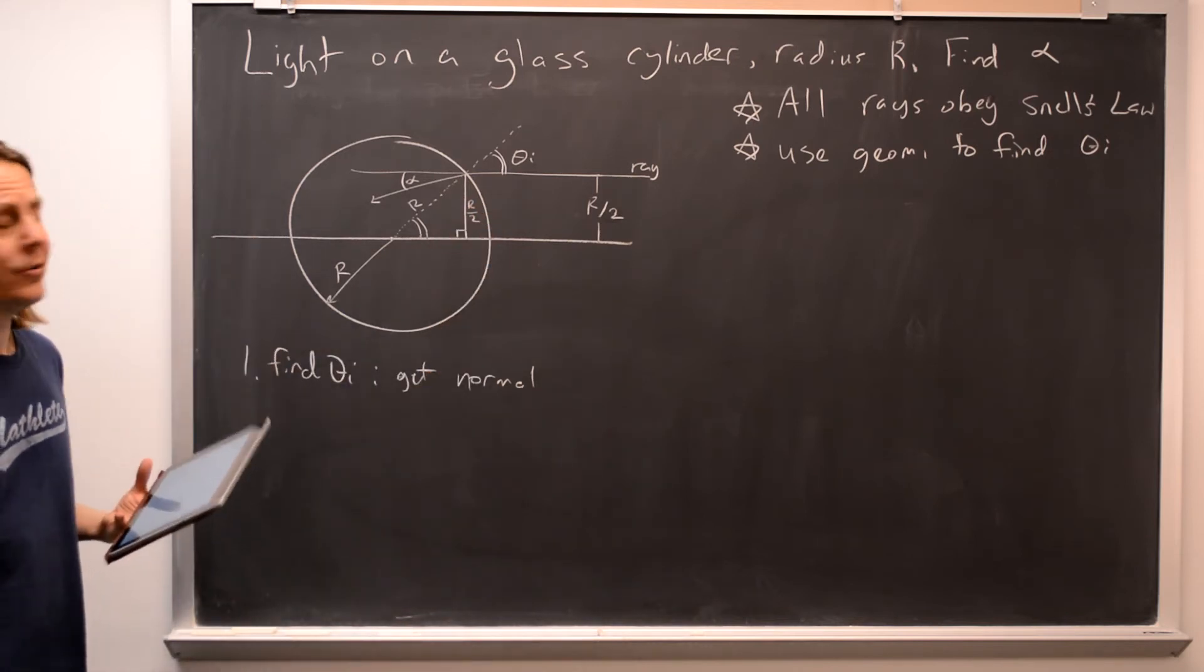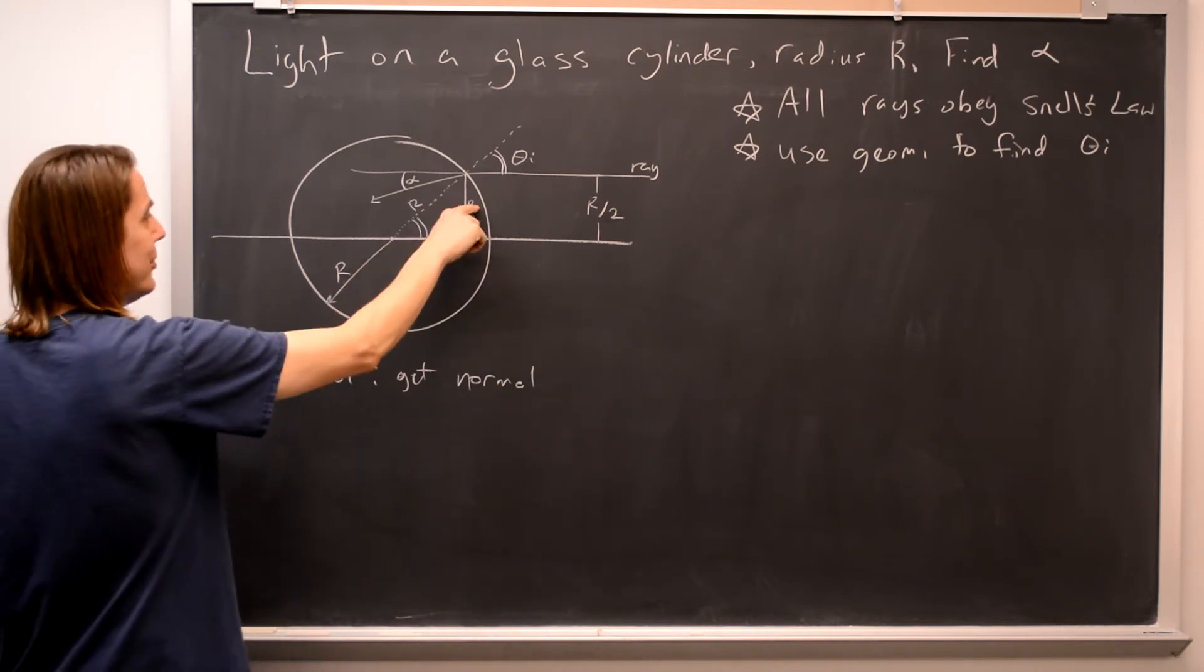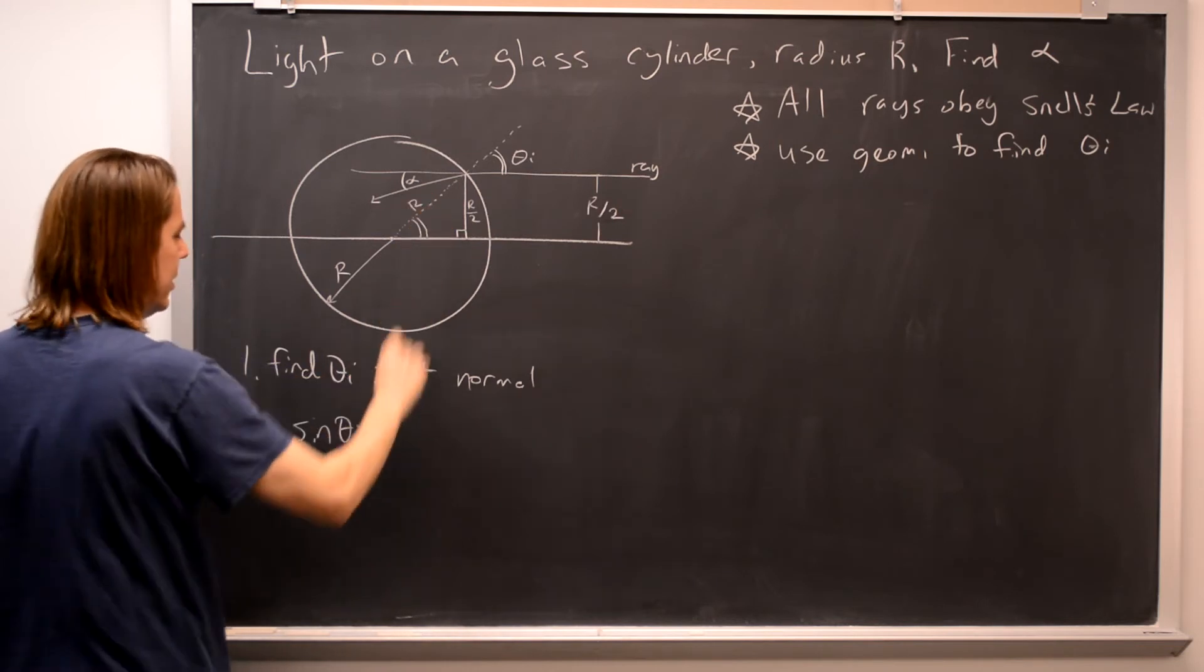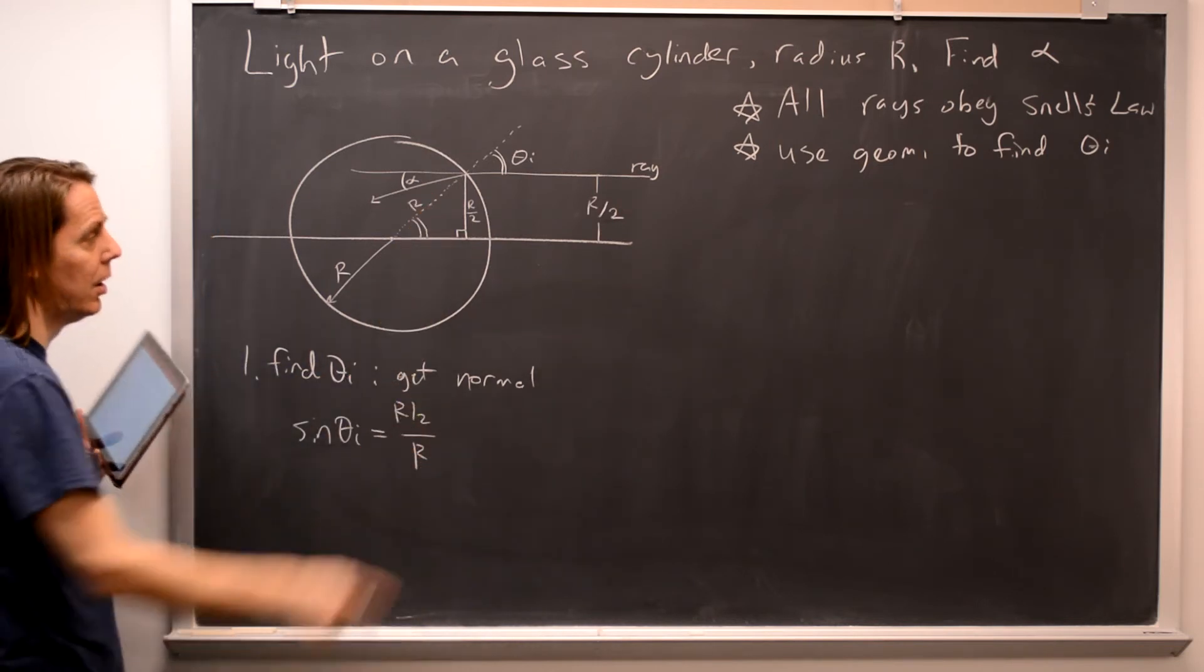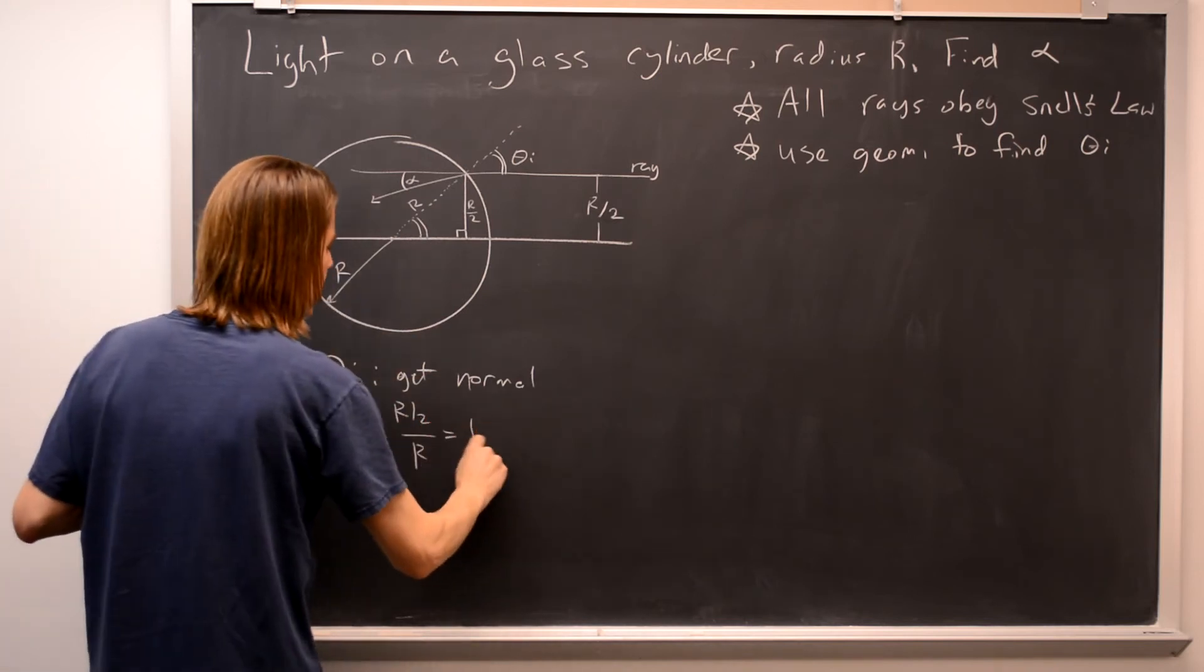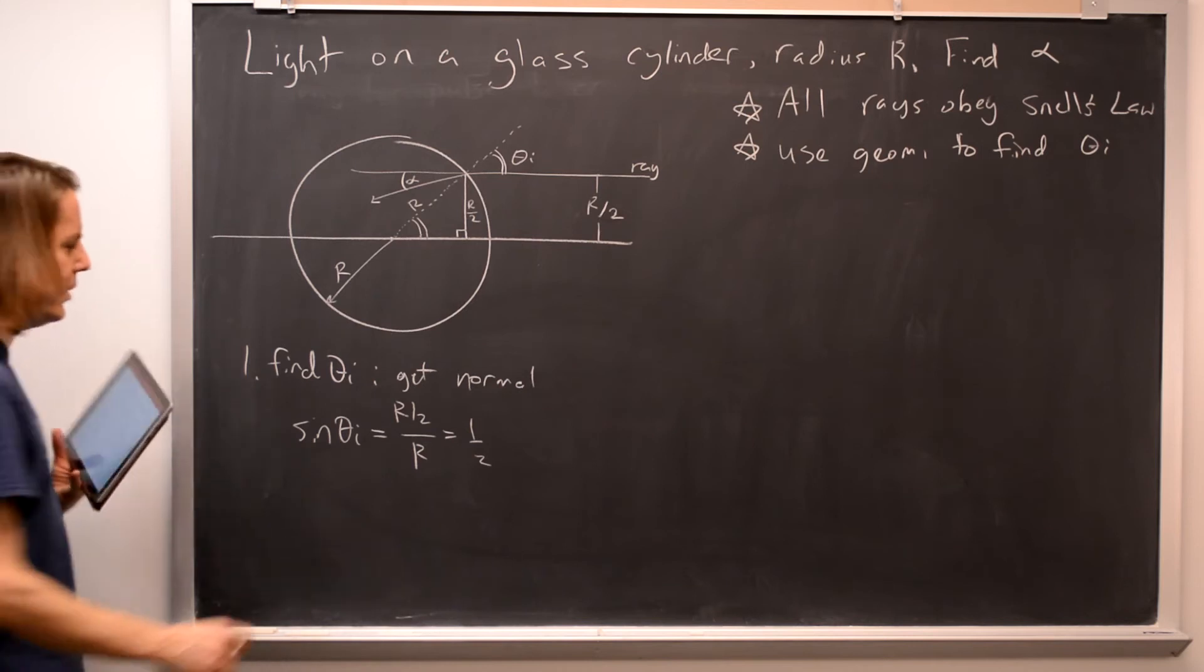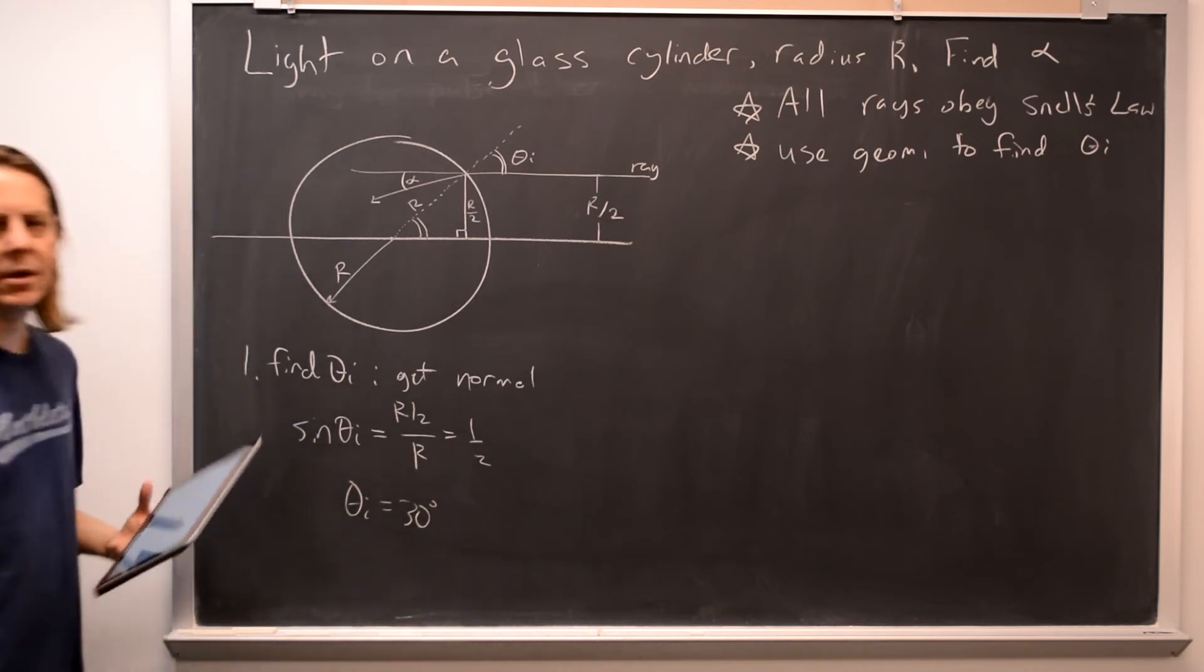On that right triangle, we know the hypotenuse is R, and we know this part of it is R over 2. So there's a right triangle we can deal with that contains the angle we're looking for. We have the opposite over the hypotenuse, so sine of theta i is R over 2 over R. Oh, there goes the R, one half. So inverse sine of one half, 30 degrees. So the theta incident is 30 degrees. Alright, we're getting there.